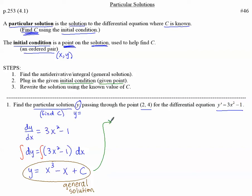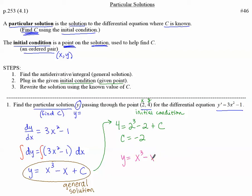So we take our general solution. Here's the initial condition — this is the X and this is the Y. Plug in Y = 4 and plug in X = 2: 4 equals 2 cubed minus 2 plus C, and solve for C. C is negative 2 in this case. Now that we know what C is, we can rewrite the solution using the known value of C — that will be our particular solution. Y equals X cubed minus X minus 2. This is the particular solution because we know what C is.